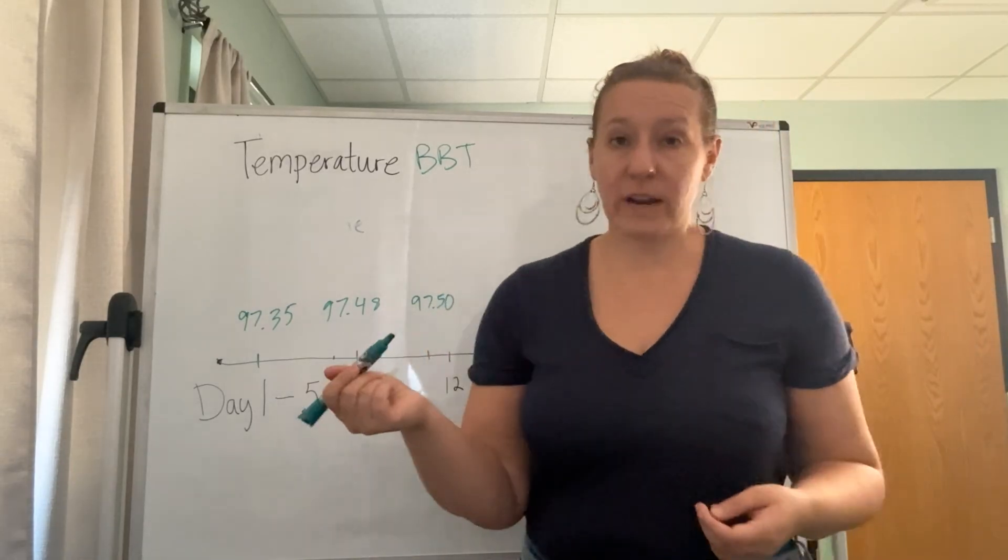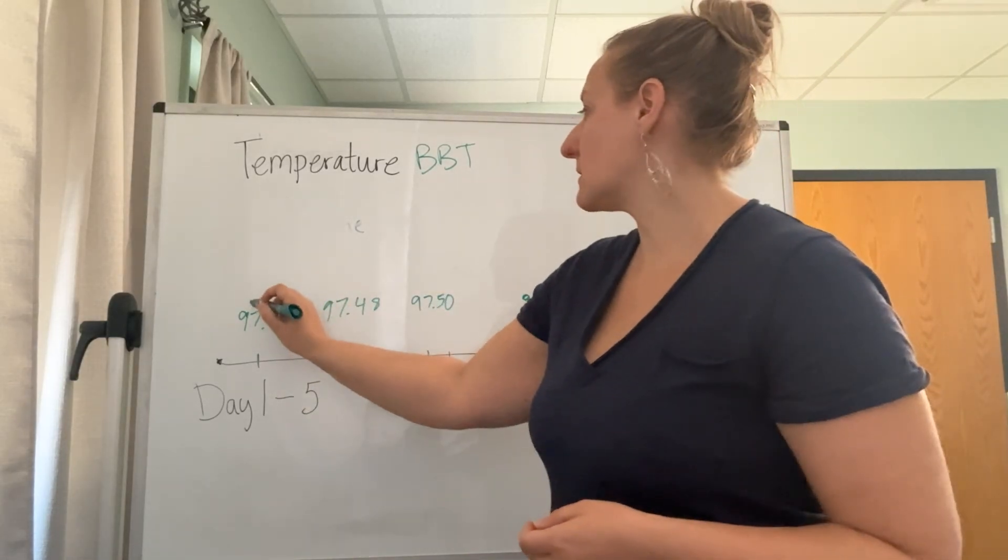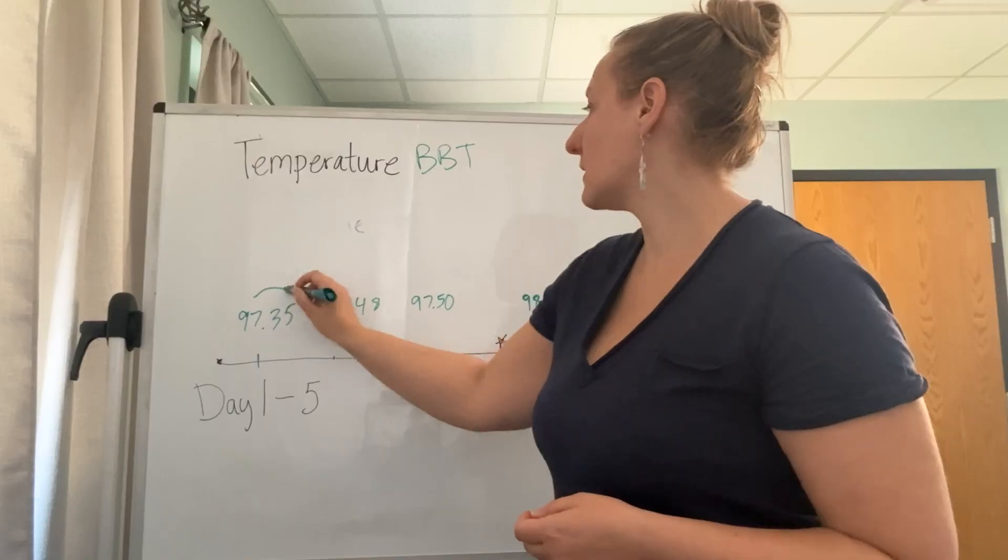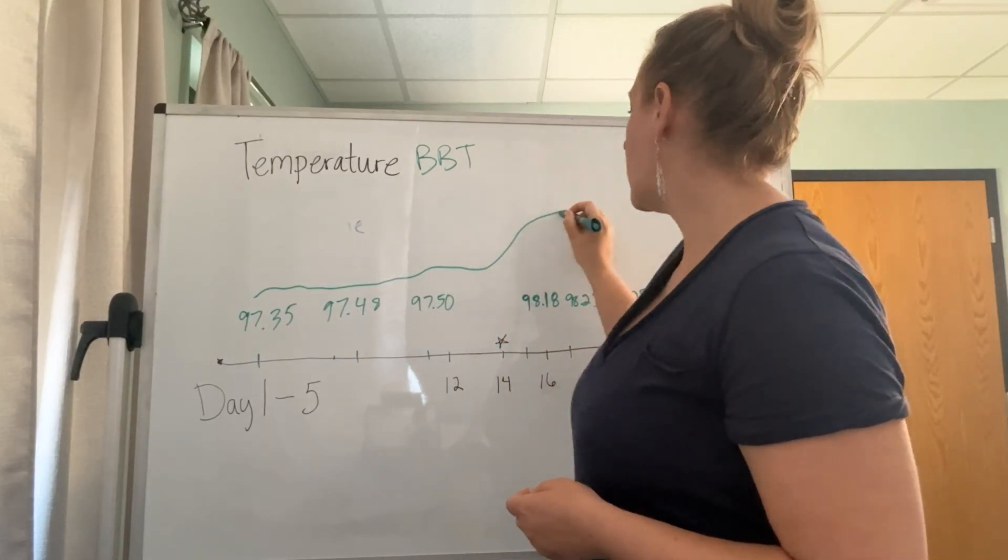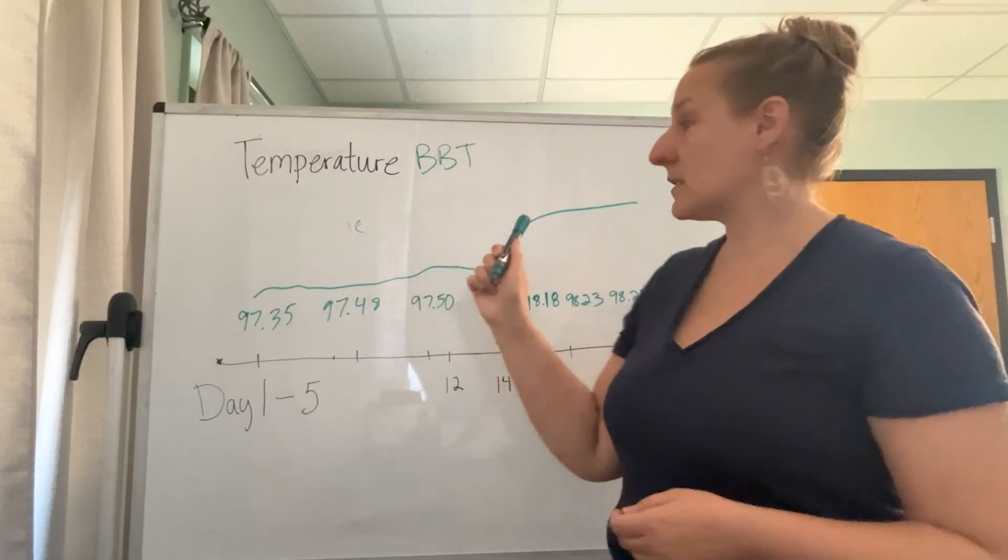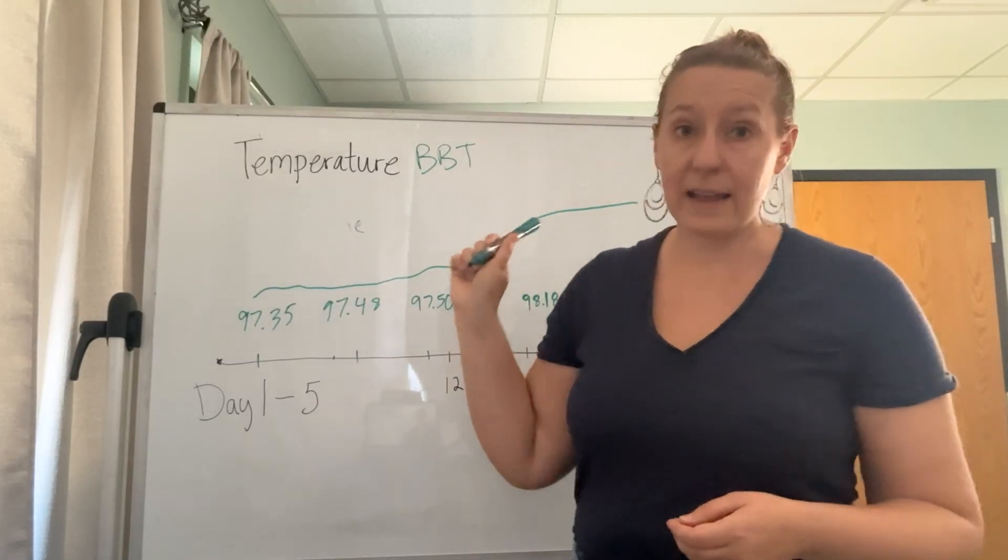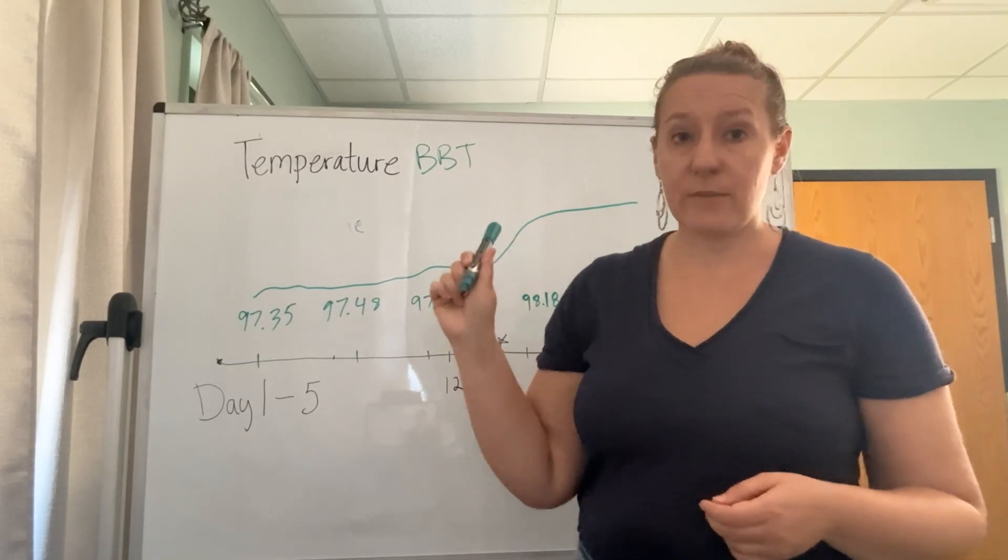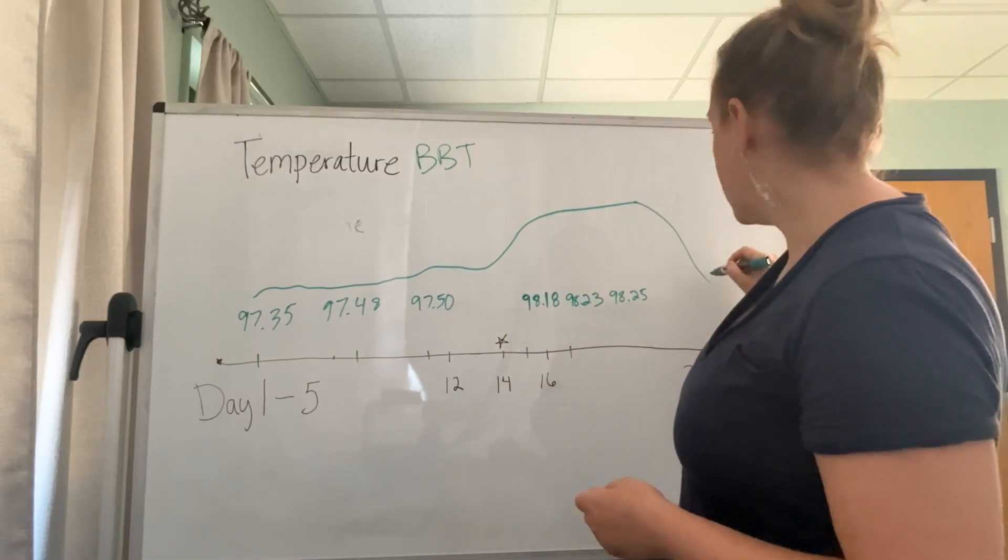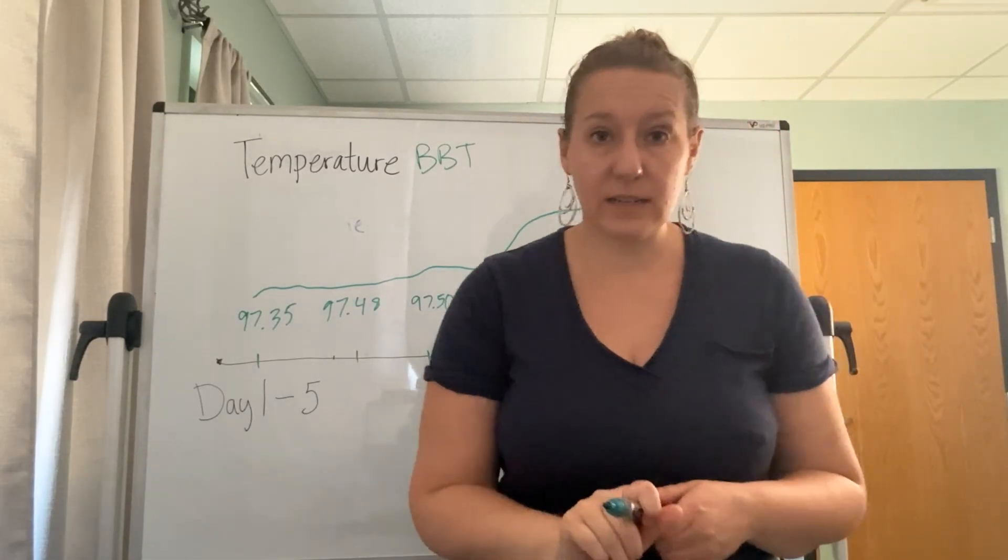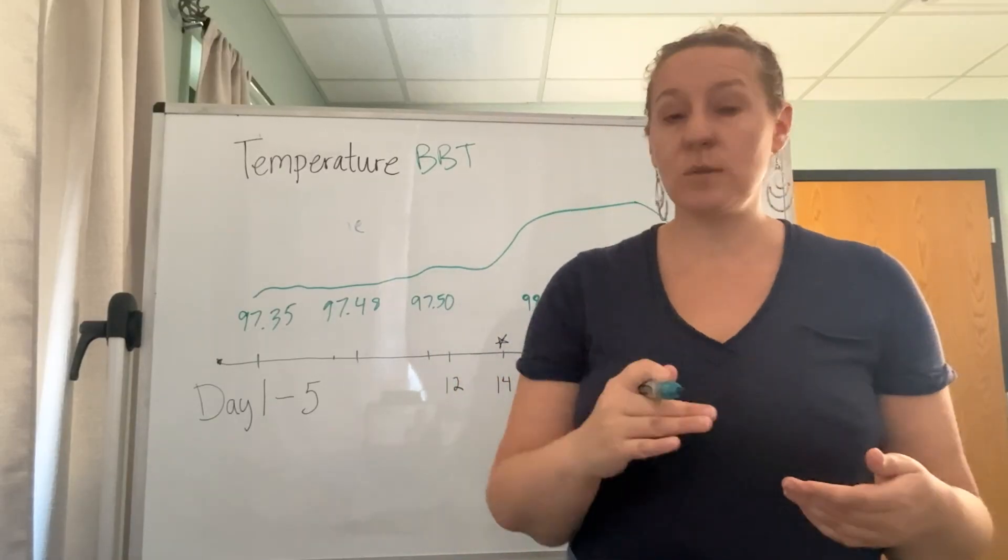If we were graphing this, my temperature was essentially here, and after ovulation it went up. If you achieved pregnancy, this temperature would stay high all throughout pregnancy. If you're going to get your period, then it would drop back down. Day one of the new cycle, it's back down to that baseline level.